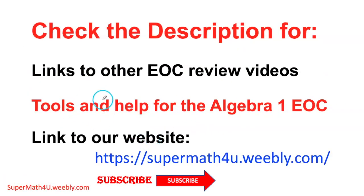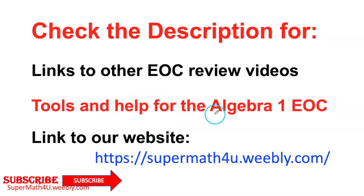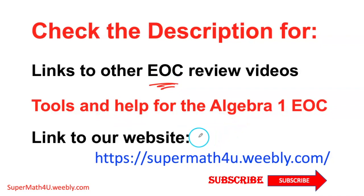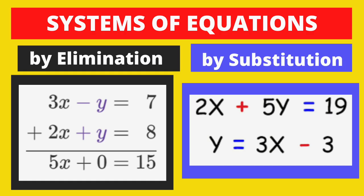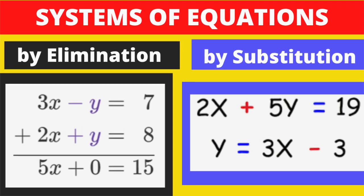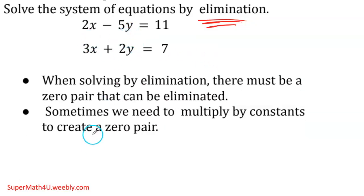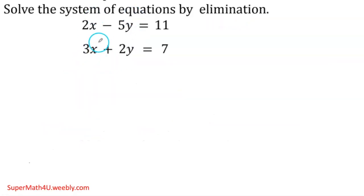Don't forget to check the description for more tools and EOC review videos — I have complete playlists for Algebra 1 and Geometry. Now we're going to do elimination — it's a different process but we get the same answer. For substitution my first step was to isolate x or y. For elimination, the idea is to eliminate either the x's or the y's by having opposite coefficients.